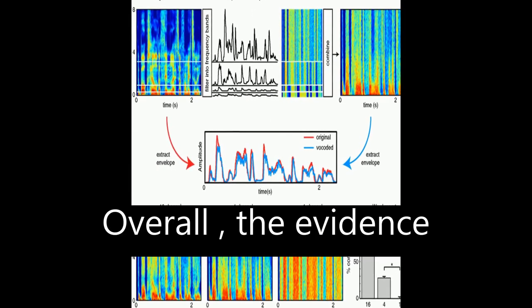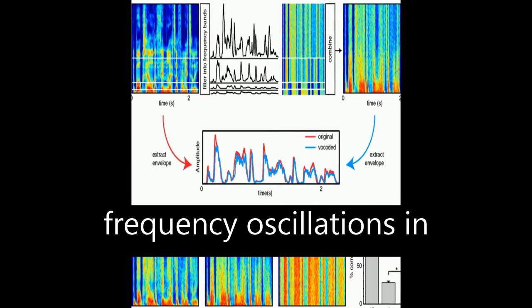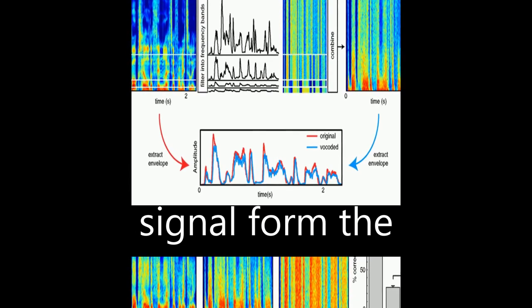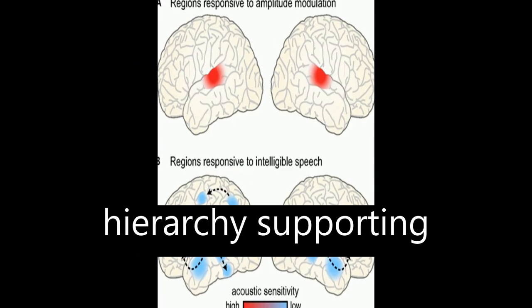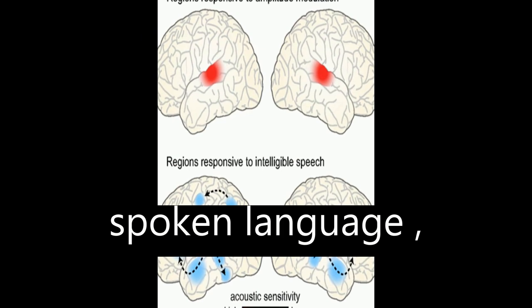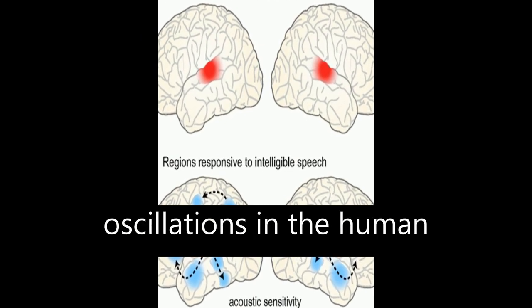Overall, the evidence suggests that low-frequency oscillations in the acoustic speech signal form the foundation of a rhythmic hierarchy supporting spoken language, mirrored by phase-locked oscillations in the human brain.